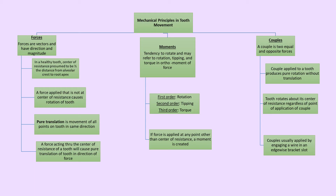Forces are vectors with direction and magnitude. The center of resistance is located approximately halfway between the alveolar crest and root apex. Tooth movement has a tendency to rotate and may involve rotation, tipping, and torquing. A couple consists of two equal and opposite forces; applying a couple produces pure rotation of the tooth around the center of resistance regardless of the point of application. Applying force through the center of resistance produces pure translation (bodily movement); force applied at any other point causes tipping or rotational movement.